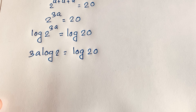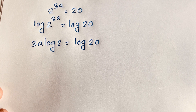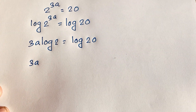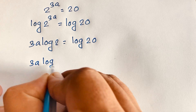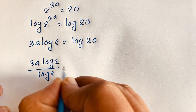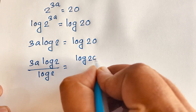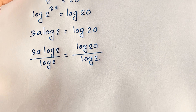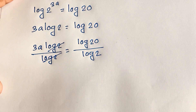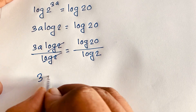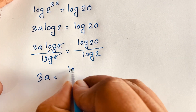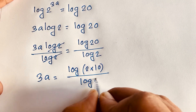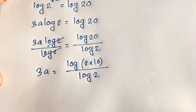Then if I divide both sides by log 2, the log 2 terms cancel out. We will find out here is 3A is equal to log 20 over log 2. Now log 20 can be written as log of 2 times 10 over log 2.